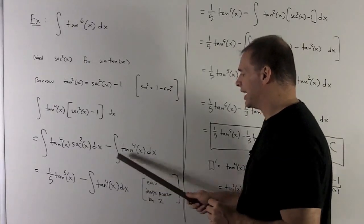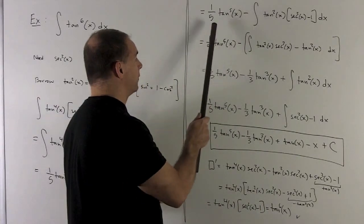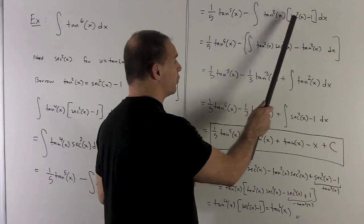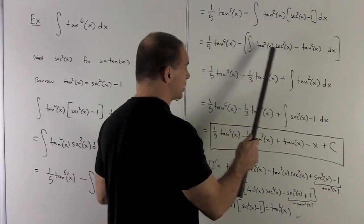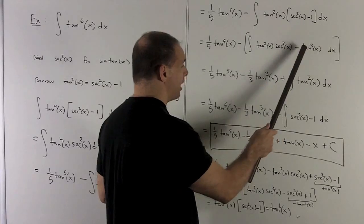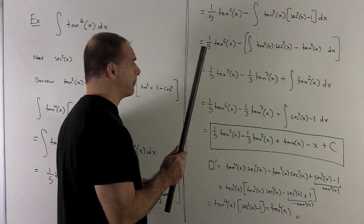Now I'm going to deal with this in the next step. So I'm going to have 1/5 tan to the 5th of x. I'm going to borrow a tan squared, rewrite it as secant squared x minus 1. Then we're going to expand this. I can do the first one, and then for the second one, I'm going to hold it off until the next step.